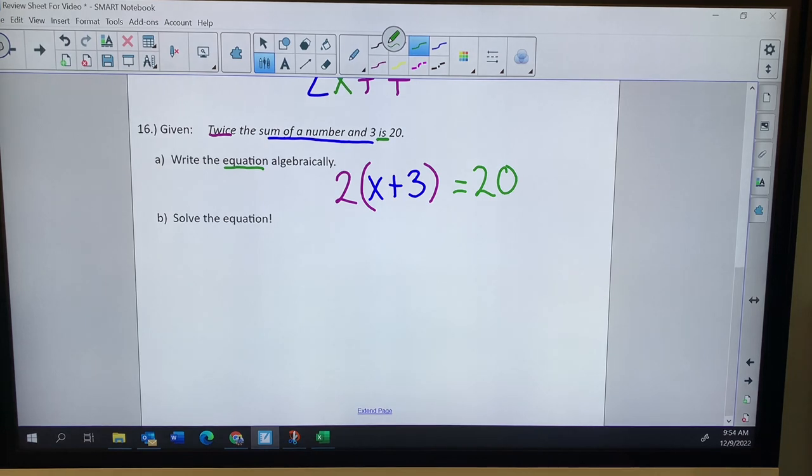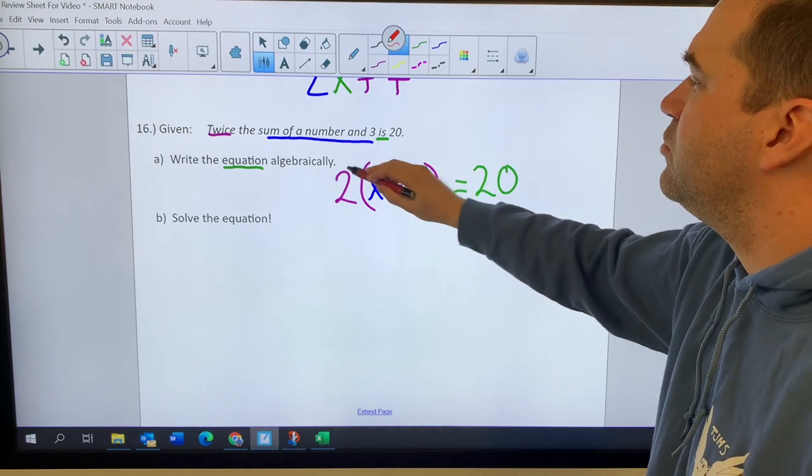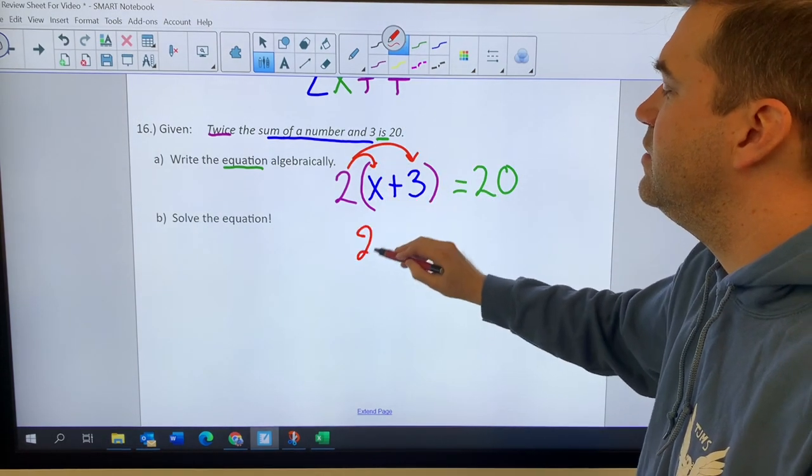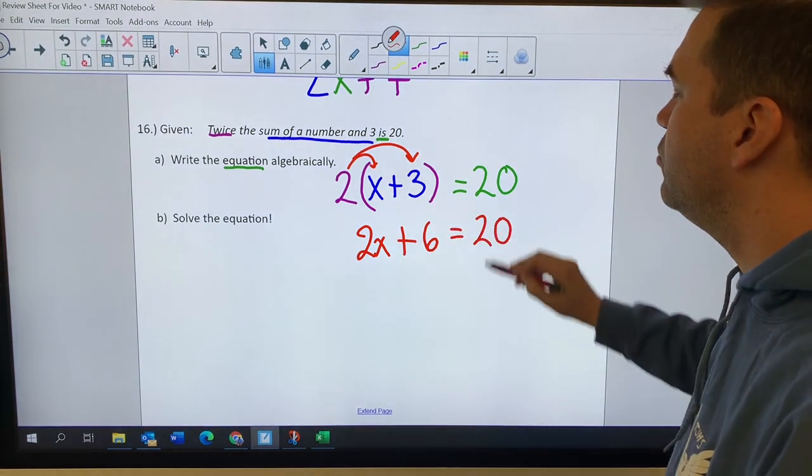And now I've got to solve this equation. I'm going to start by simplifying it, which I will distribute. Two times X, two X, two times three, six equals 20.